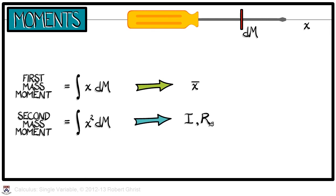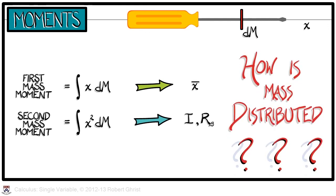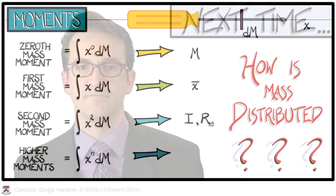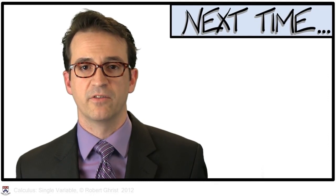There are other moments as well, all of which answer that same question. The higher mass moments are integrals of the form x to the n dm. And you may well wonder what sorts of physical properties do these integrals give. We're not going to have time to answer that now. But I will say that there is one more mass moment that you know. That is the zeroth mass moment with the integral of x to the zero dm. That, of course, is just the integral of dm, which is m, the mass.